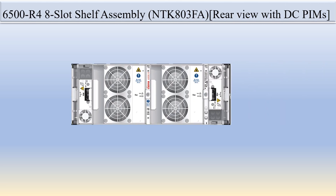The 6500 R4 eight-slot shelf assembly comes with two types of power input modules: a DC power input module and an AC power input module. In this picture you can see the rear view of the NTK803FA with the DC power interface module.